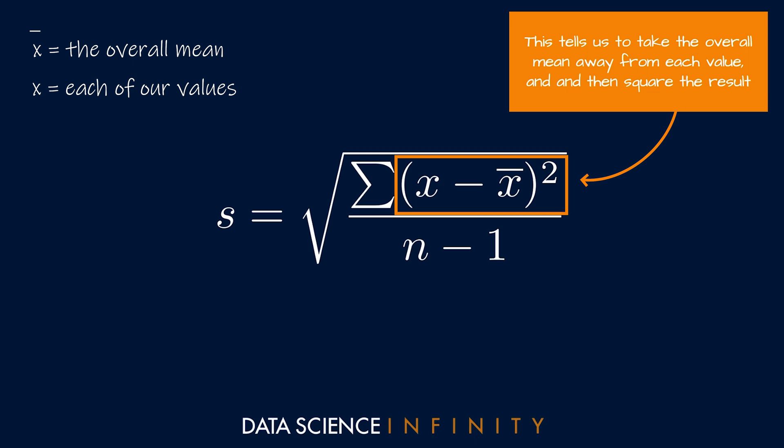giving a measure of the total spread somewhere near zero, where in reality the true spread of the set was large. It just happened that some values were larger than the mean and some values were less than the mean.